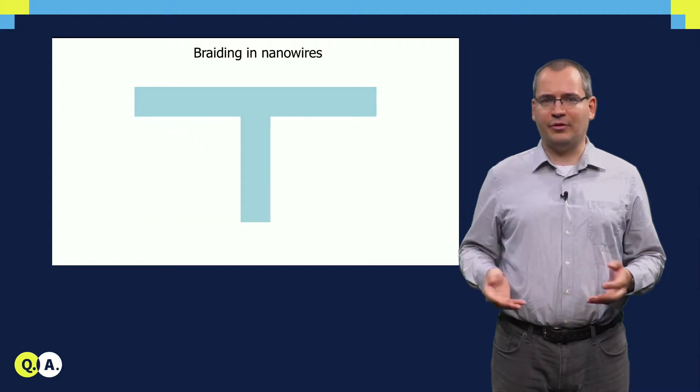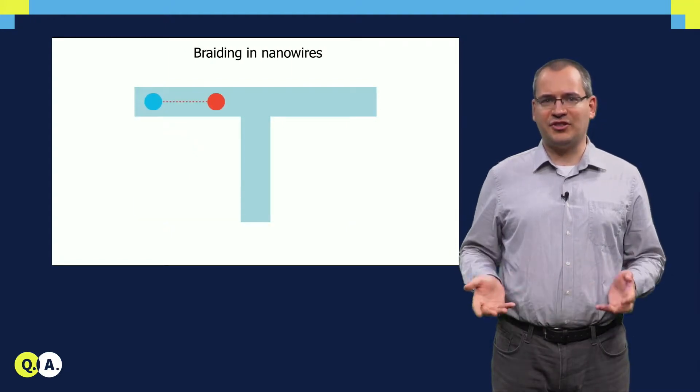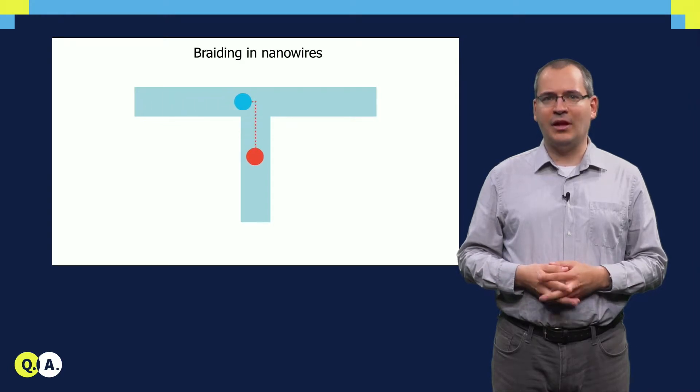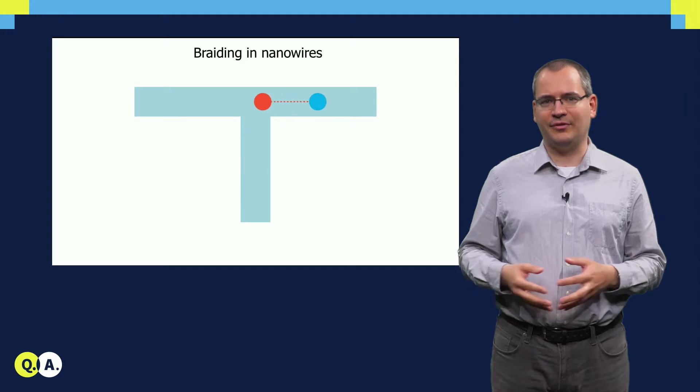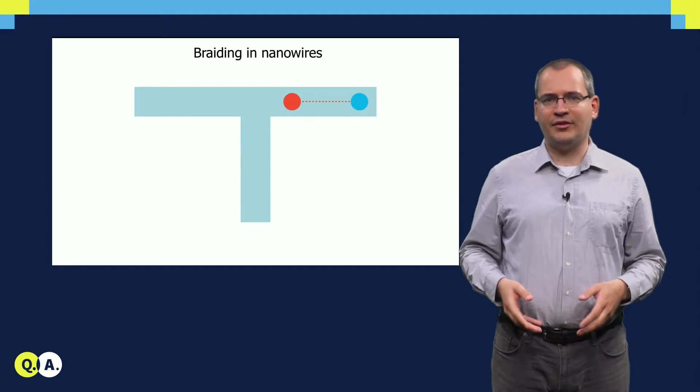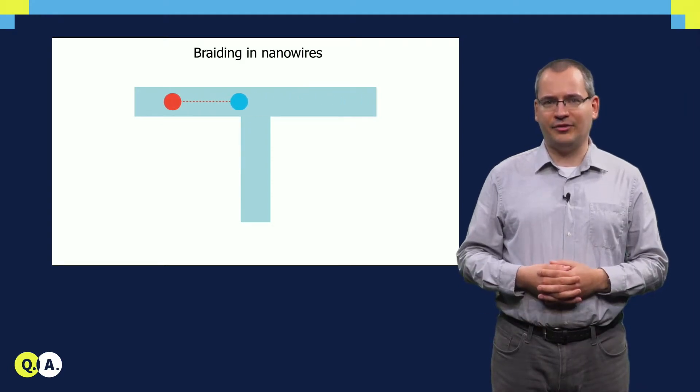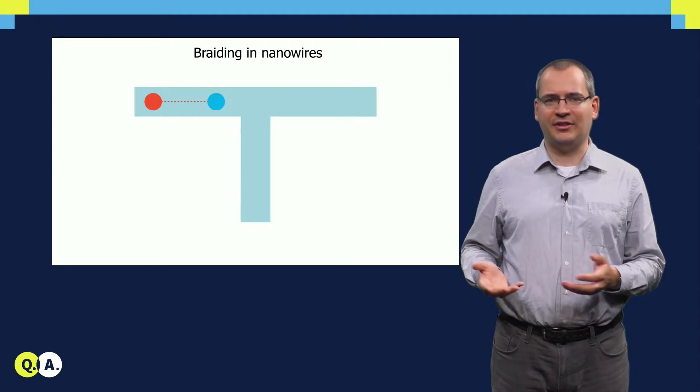The way to perform braiding is a clever workaround. If we attach an extra segment to the nanowire, we can move this topological object around, just like you do a U-turn with your car. This allows for braiding of the two particles, orange and blue, as shown in the animation.